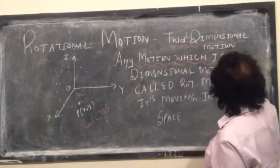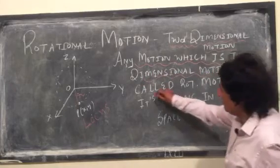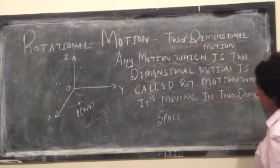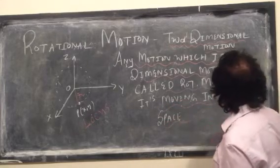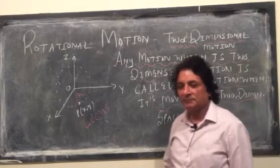Any motion which is two-dimensional motion is called rotational motion when it is moving in two-dimensional space. Any doubt? No, sir. Is it clear? Yes, sir. That is it.